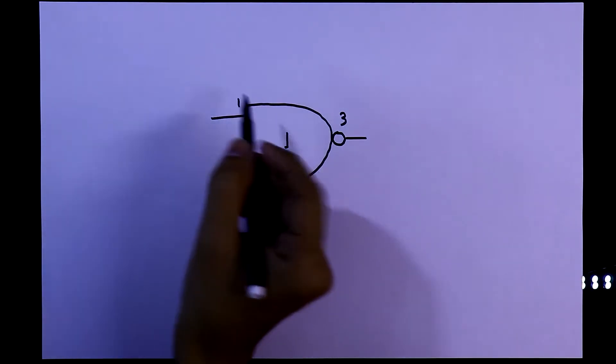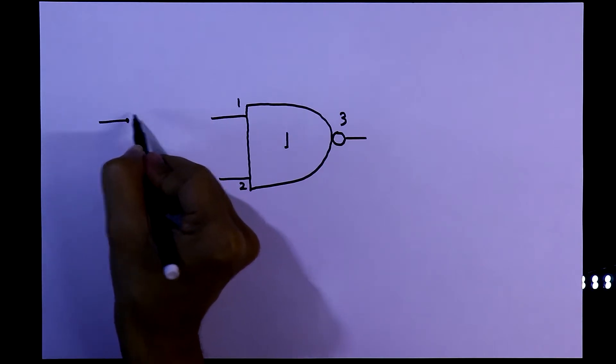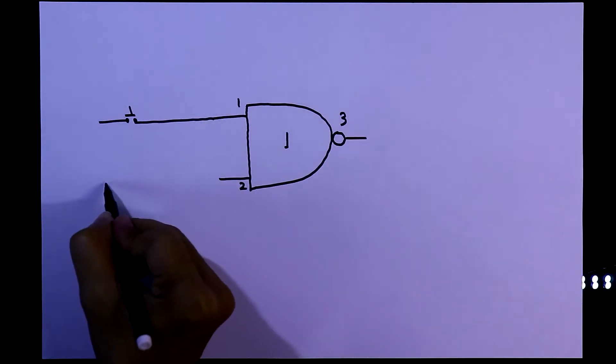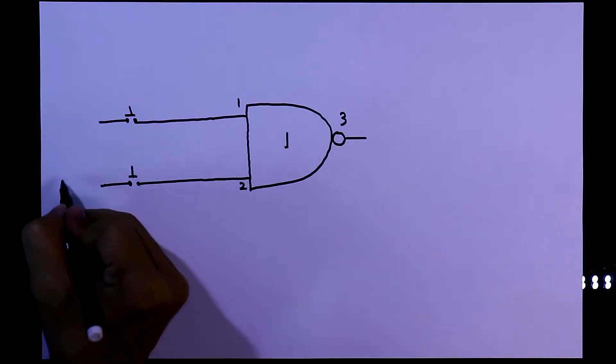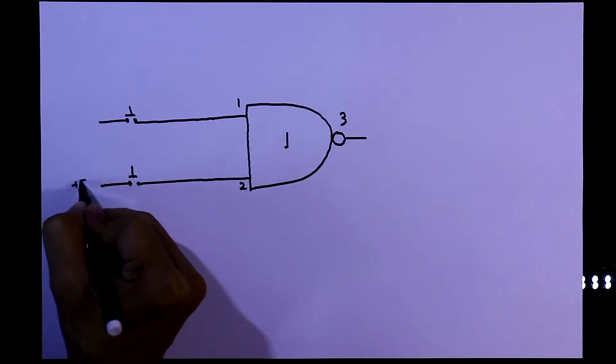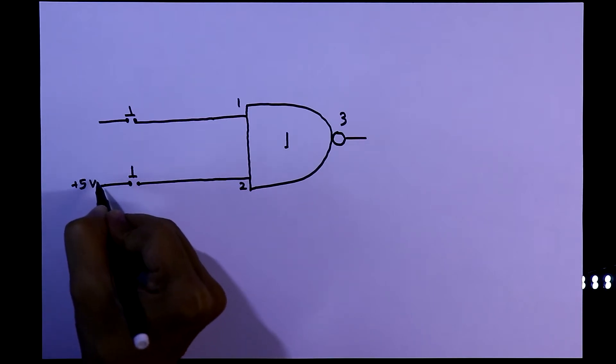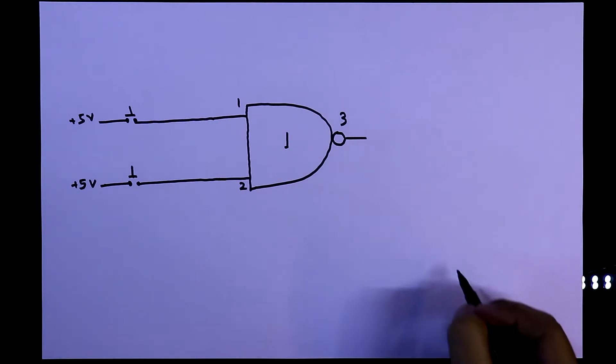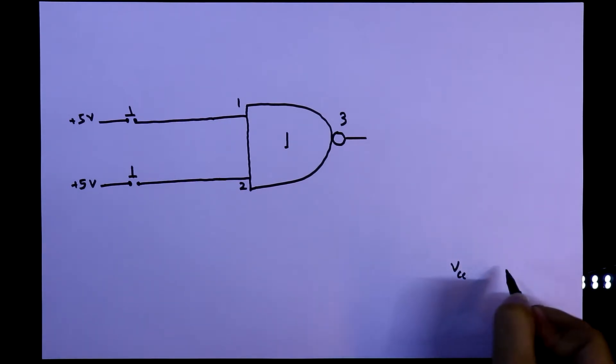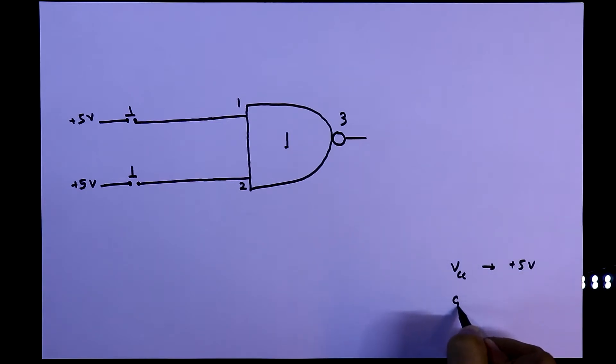To provide input to the gate, we have to use the push button switch or any kind of switch. And on the other side of the switch, here is the high signal. I will connect plus 5V as high signal. So as a power supply, I will use VCC as plus 5V and ground.